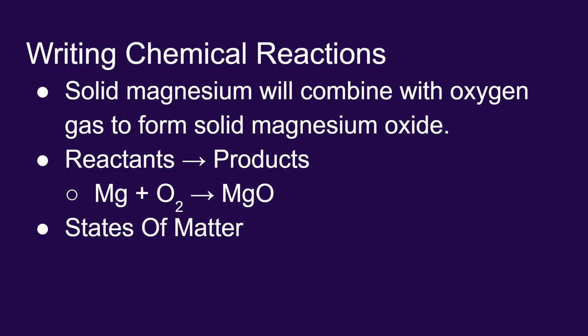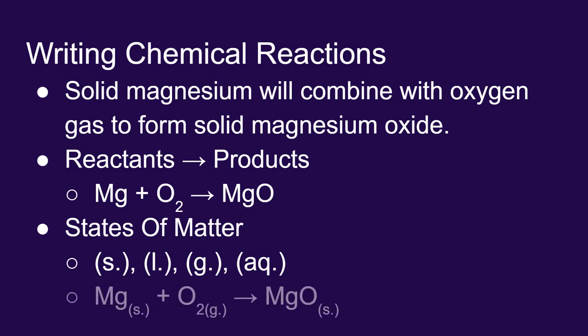We can also include states or phases of matter in our balanced equations. We would use an S for a solid, an L for a liquid, or G for a gas. We will also indicate if things are aqueous, which means they are dissolved in water. In this case, the magnesium is a solid, the oxygen is a gas, and the magnesium oxide is a solid.